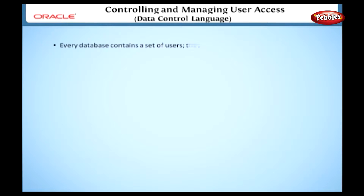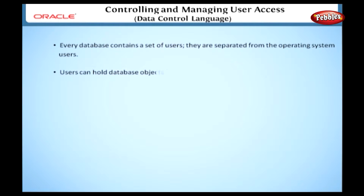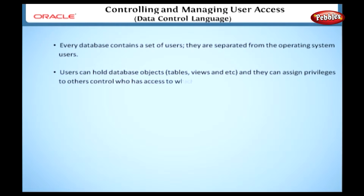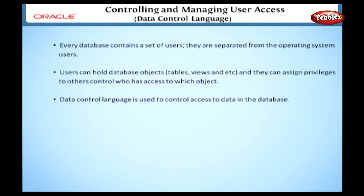Before granting and revoking permissions, we must know the users of the database. Here we will see the different users of the database. Every database contains a set of users. They are separate from the operating system's users. Users can hold database objects — tables, views, and so forth — and they can assign privileges to others so they can have access to an object.